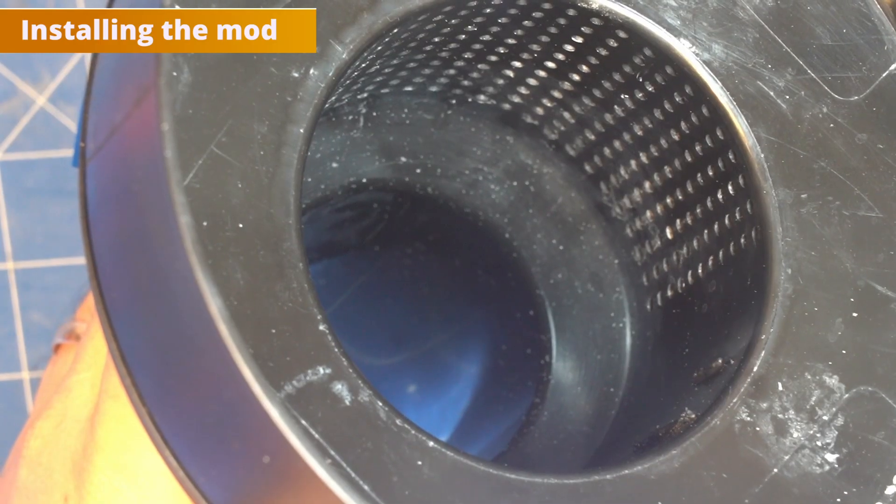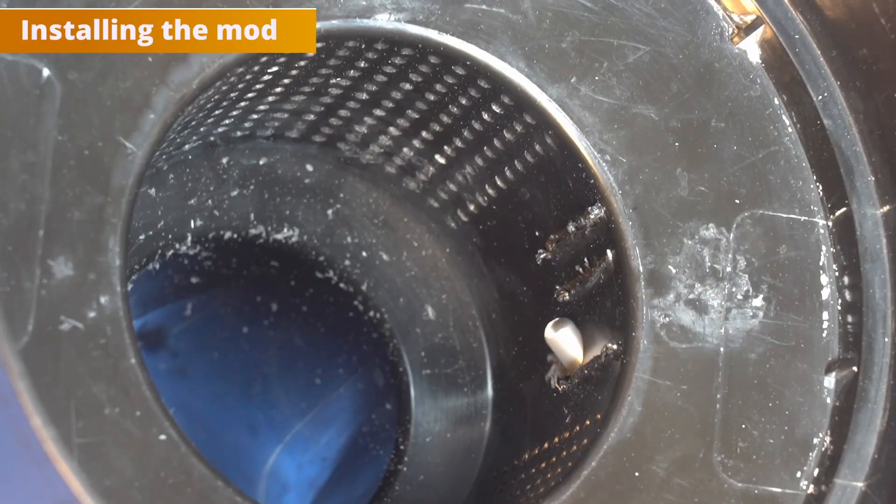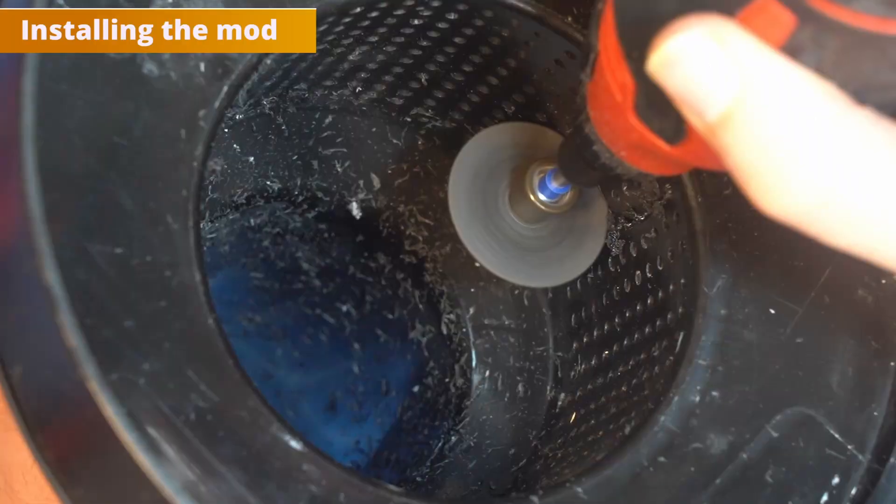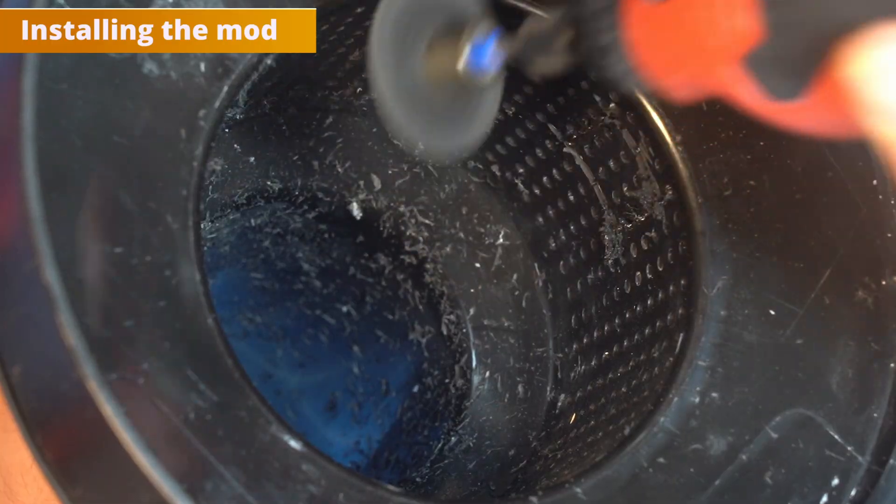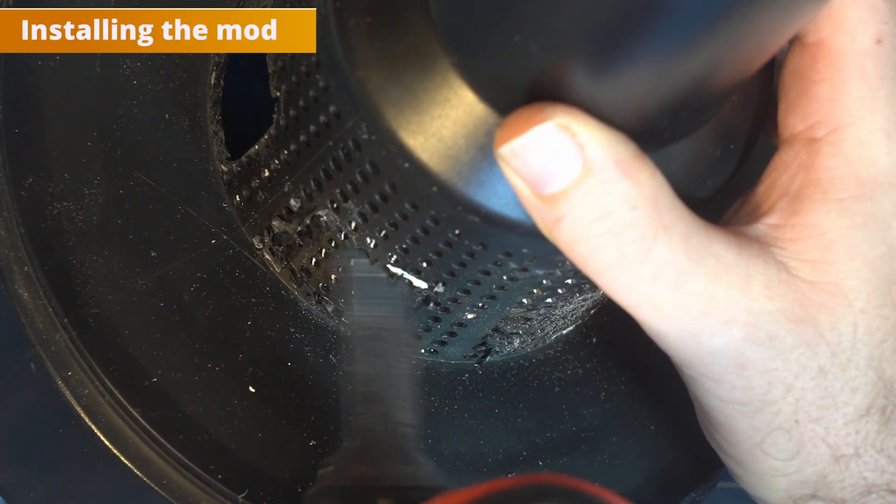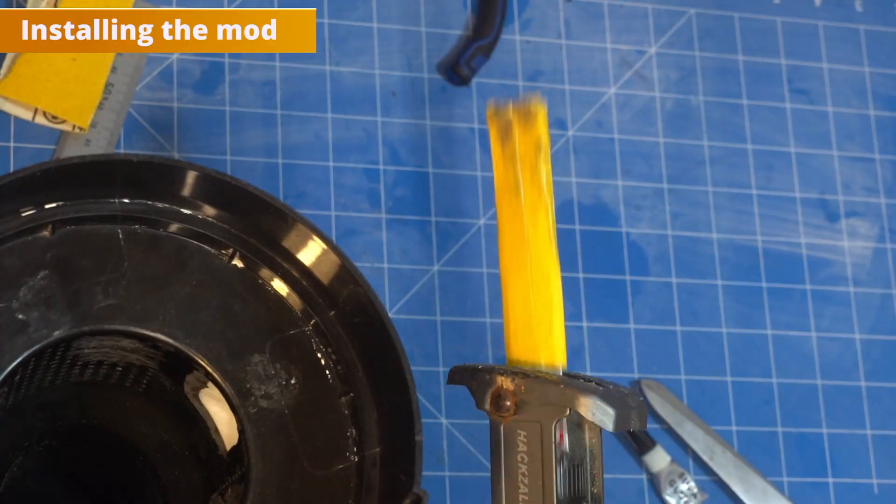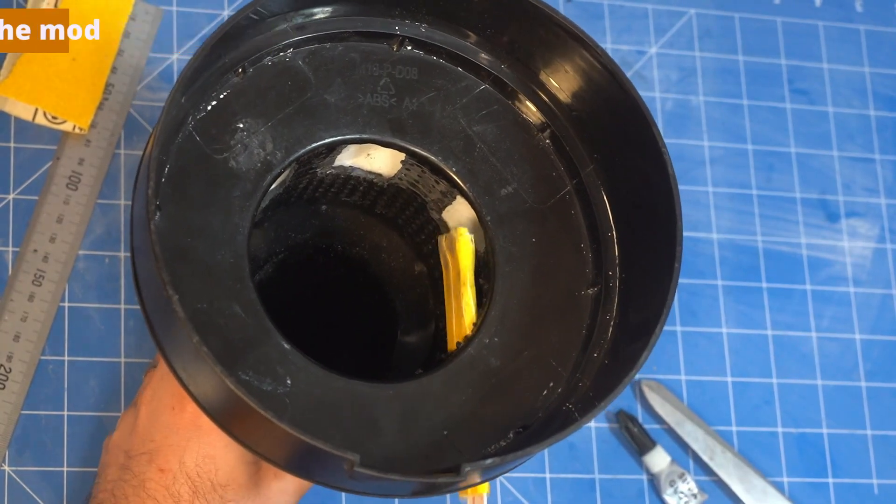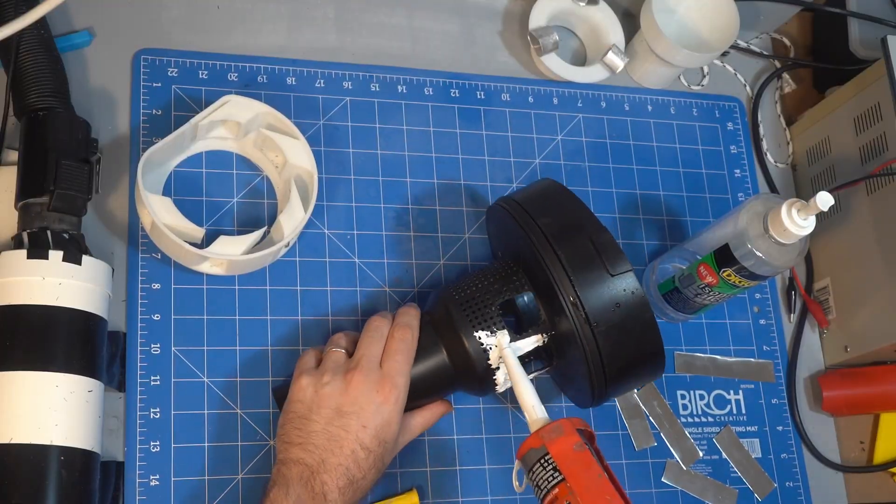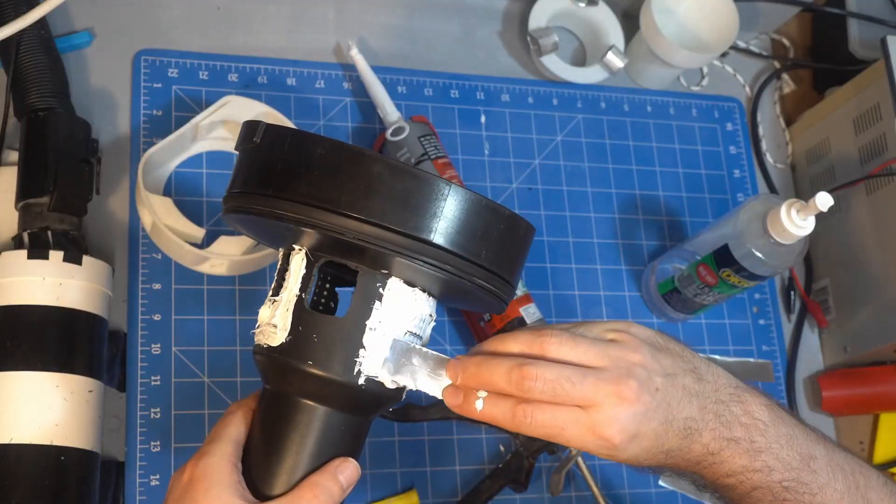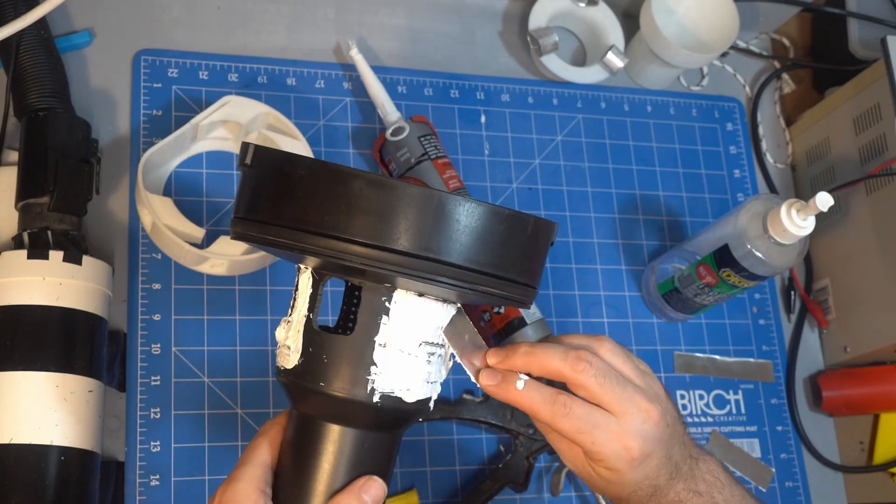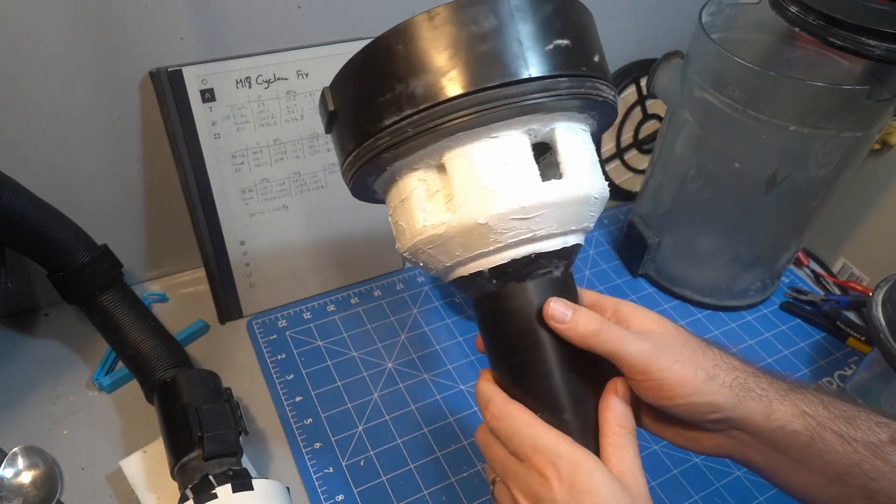Installing this mod turned out to be way more painful than I imagined and took several hours and making some custom tools. I finished it with cork to seal the gaps and smooth the transitions. In hindsight, I should have used builder's bog so that I could sand it to a smoother finish.